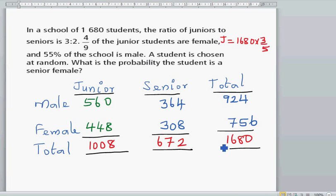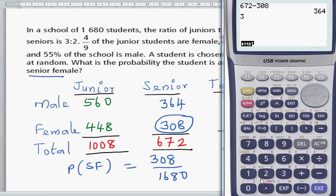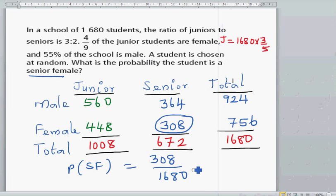Now the question is, if a student is chosen at random, what's the probability that a student is a senior female? The probability that a student is a senior female would be 308. There are 308 females who are seniors. That would be 308 out of 1,680. Let's use a calculator. 308 divided by 1,680, which is 11 out of 60.